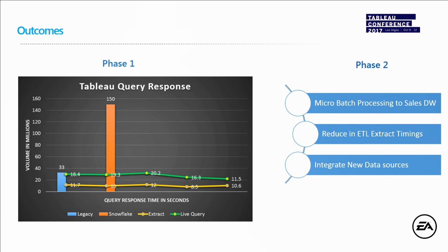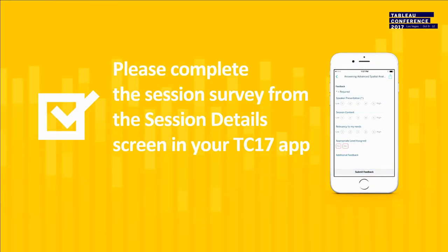This is our implementation — Phase 1 and Phase 2 we are planning for. We hope in Phase 2 we will get more Tableau visualization capabilities added and also the response time will come down. That's our implementation at EA — how we implemented Tableau and Snowflake over the years. Please take the survey on your TC17 app and we'll see you in 2018. Thank you very much.